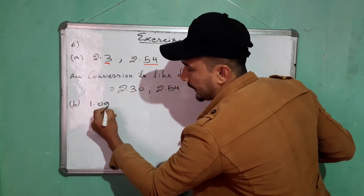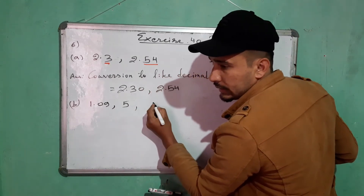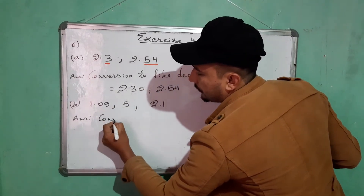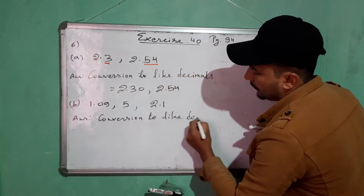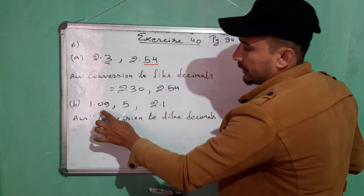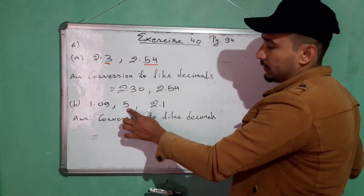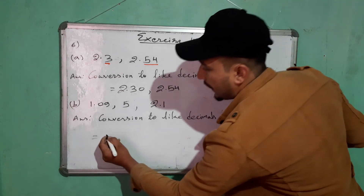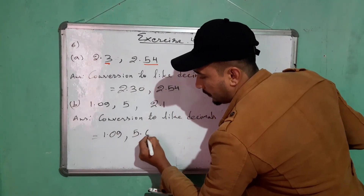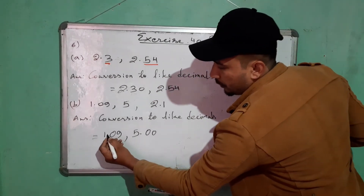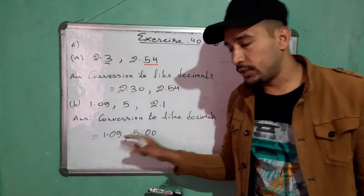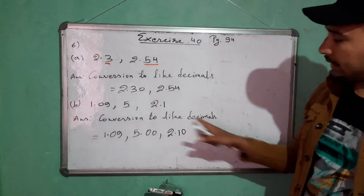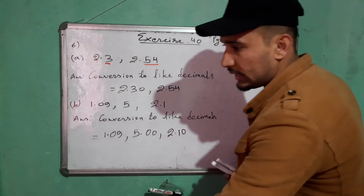Number (b): 1.09, 5, and 2.1. Converting to like decimals: 1.09 has two digits after the decimal. The number 5 has no decimal, so you add a decimal point and two zeros: 5.00. The number 2.1 has one digit, so add one zero: 2.10. Now all have two digits after the decimal — these are like decimals.